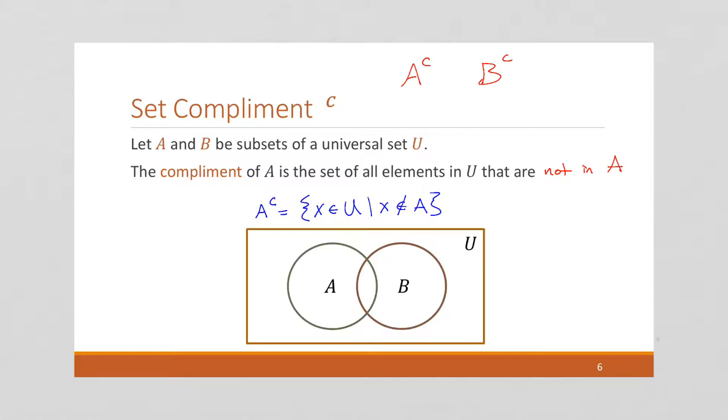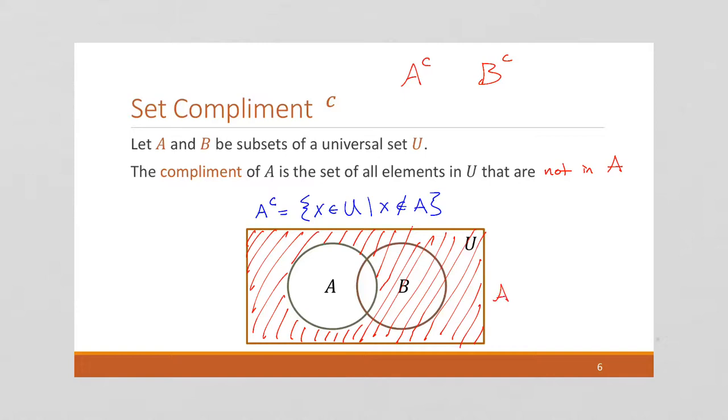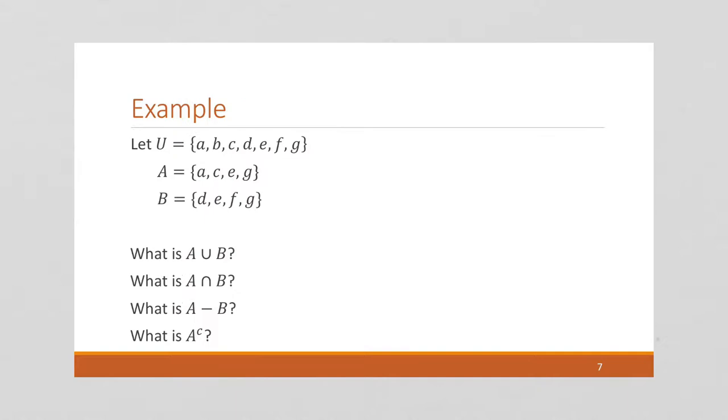And notice that leaves an awful lot of territory. So x can be anywhere in the universe in B or not in B, but it cannot be in A. So this is a complement. This is synonymous with not. It's the opposite as anything that's not in A. Okay, so we've seen four different operators.